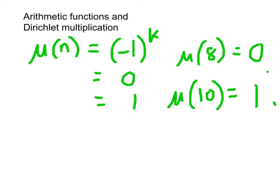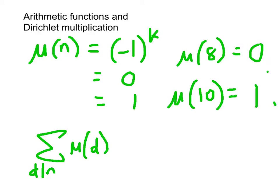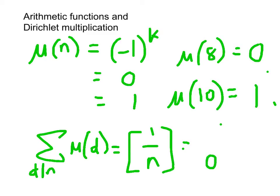Now the Möbius function is important in number theory. One of the fundamental properties is a remarkably simple formula for the divisor sum — the sum over divisors d of n of mu of d. That sum always equals 1 if n equals 1, and 0 if n is greater than 1.